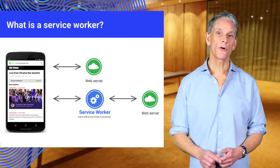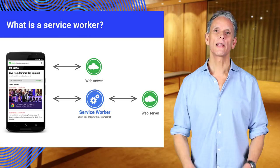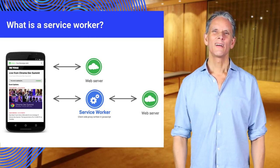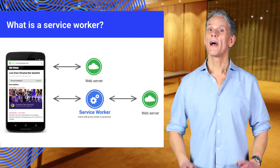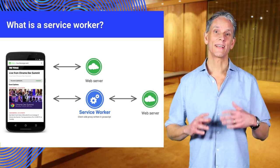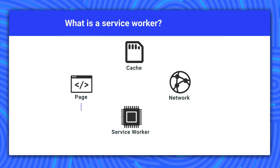Service workers are promise-based. At a high level, a promise is an object used as a kind of placeholder for the eventual results of a deferred and possibly asynchronous operation. Service workers also depend on two APIs to work effectively: Fetch, a standard way to retrieve content from the network, and Cache, a persistent content storage for application data.